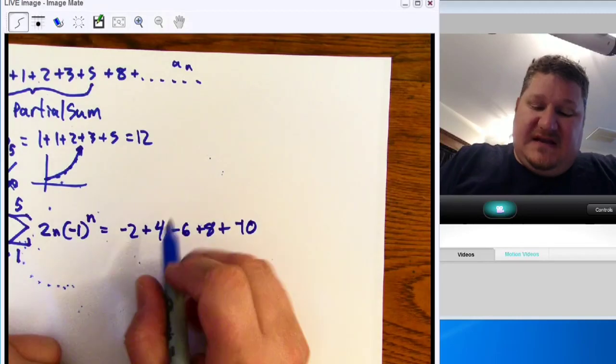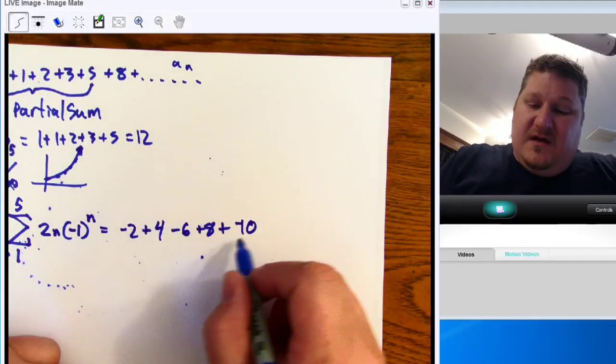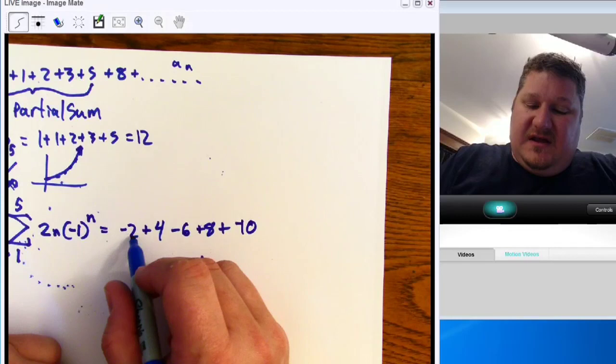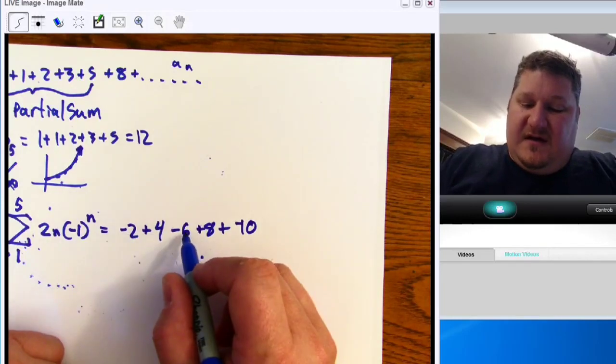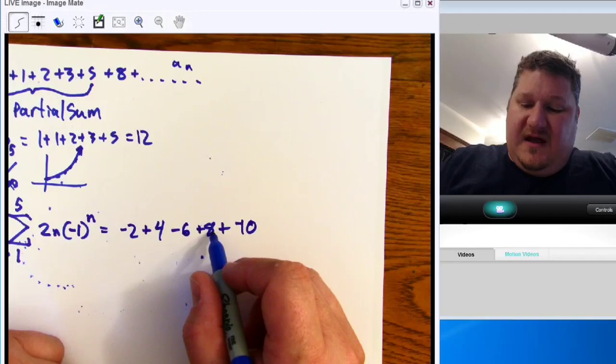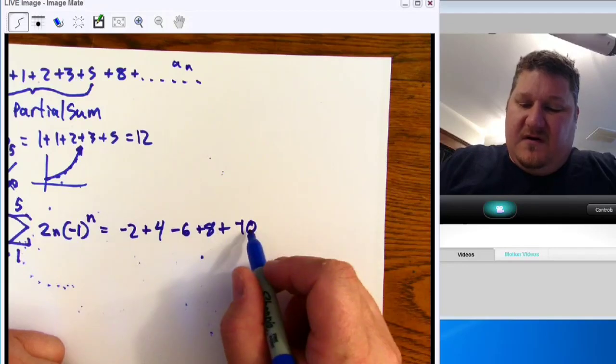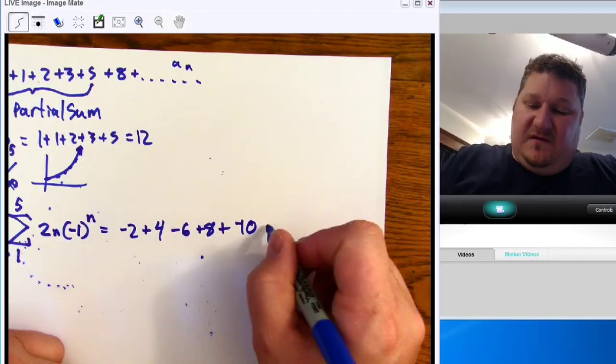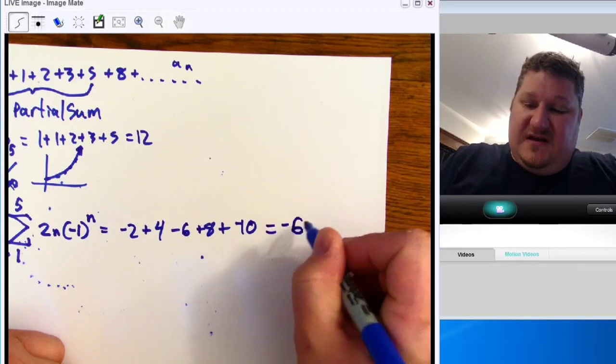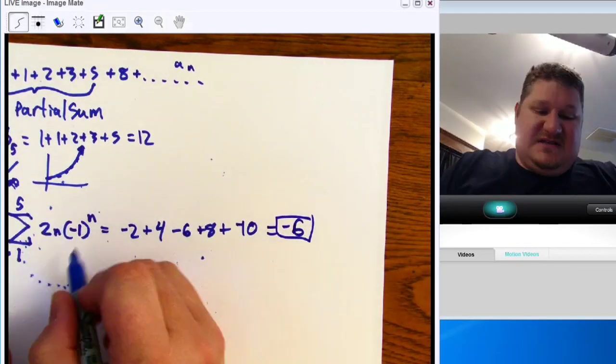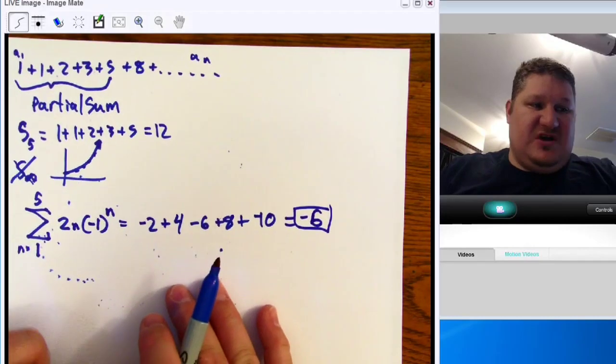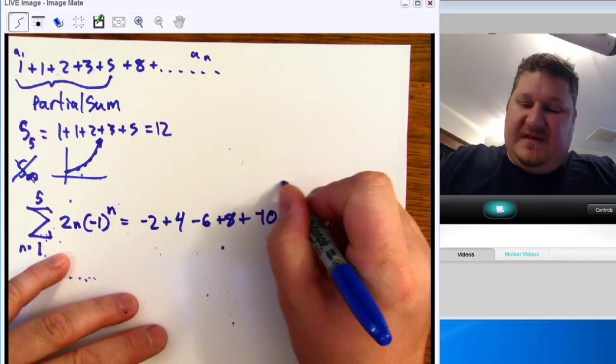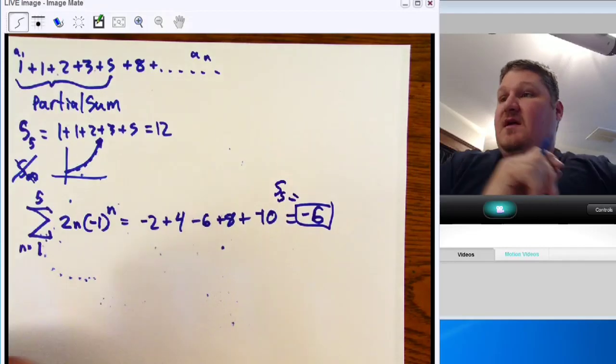Now, in this case, you say, alright, well, this case is going to be 2. Then I got positive 2. Then I have negative 4. Then I'm going to have positive 4. Then I'm going to have negative 6. So, the answer to this question is negative 6. Because that is the fifth partial sum. Fifth partial sum. So, this equals S5. So, we have partial sums.